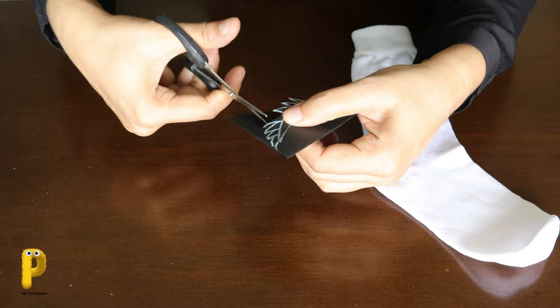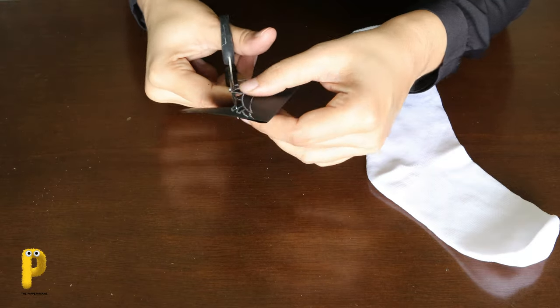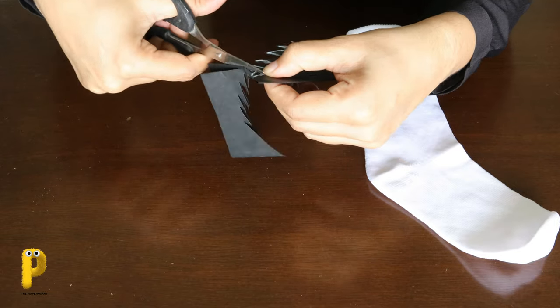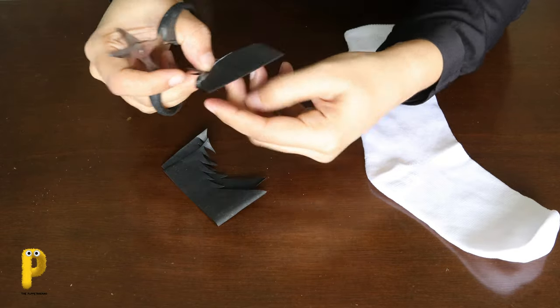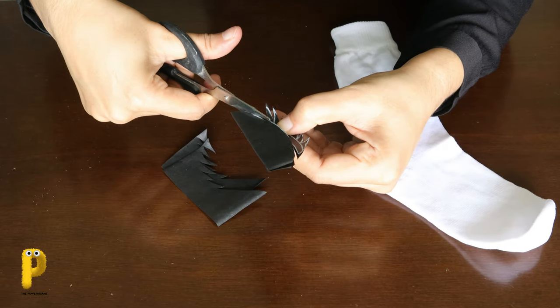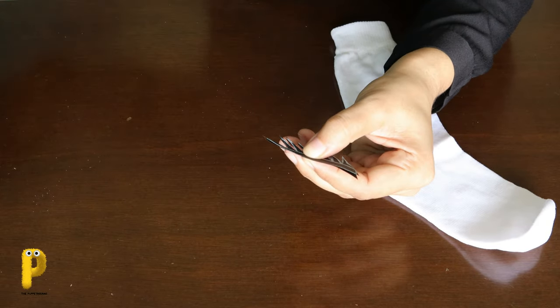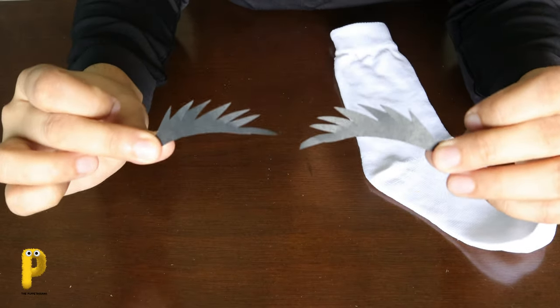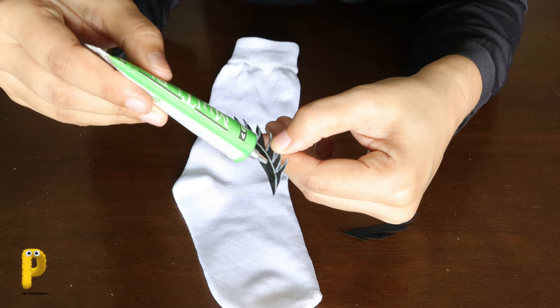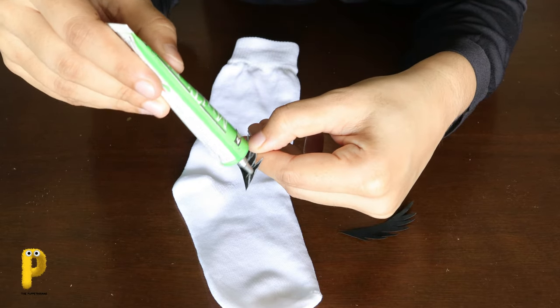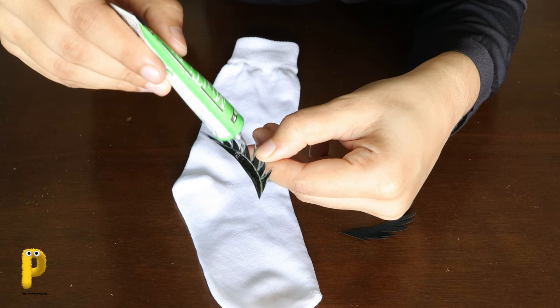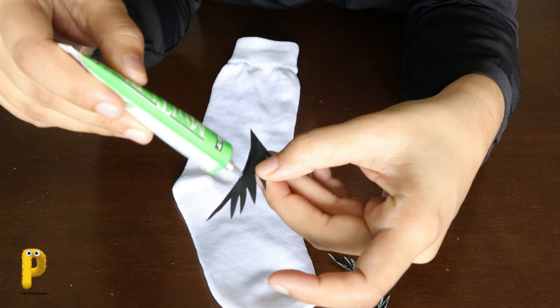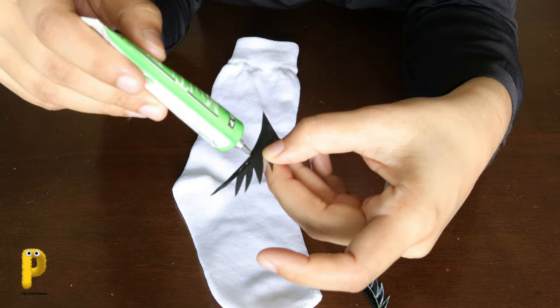Remember, you can always use some googly eyes or you can draw eyes with a black marker on the sock. Do what you like. Here we have the eyes. Now put some glue behind the eyes. Remember the side that you are going to paste on the sock. Put glue on both the eyes. We won't stick the eyes right away. So keep them on the side for a minute.